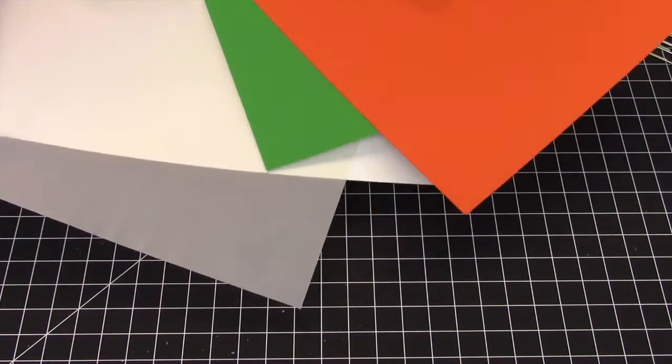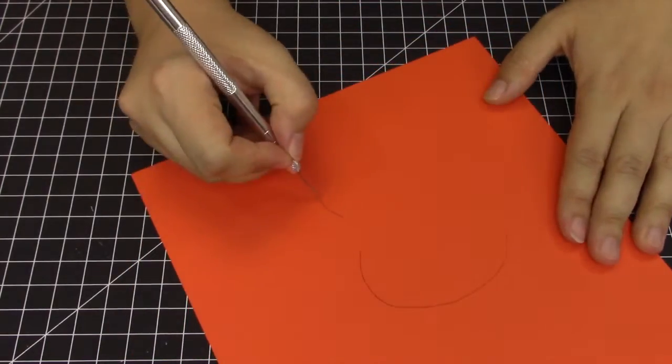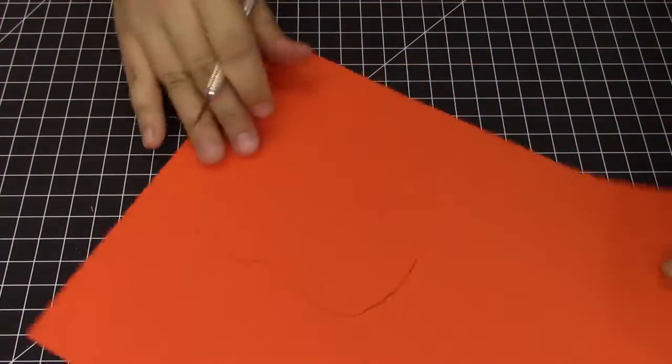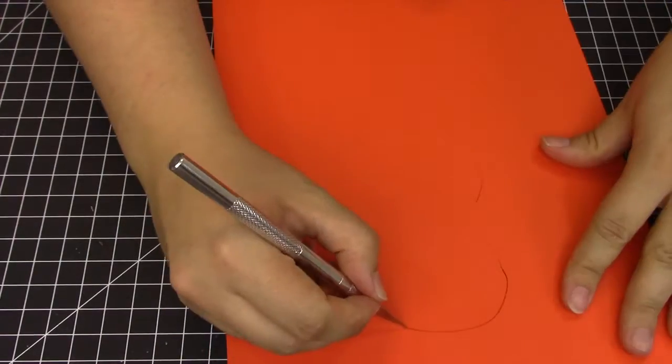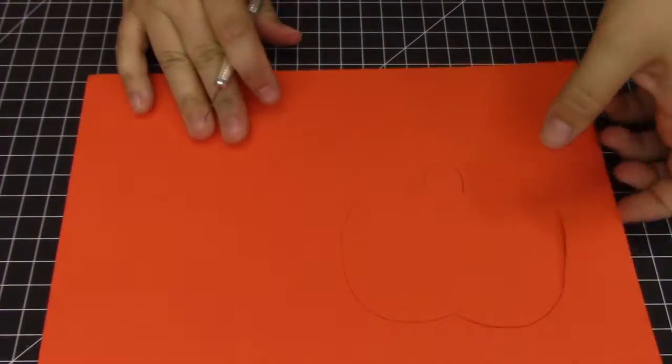You also need construction paper. We'll be using orange and green. Start with your orange paper and cut out the shape of a pumpkin. You can make your pumpkin small or large. Be sure to also have a stem on the top. This is actually where the battery will go.